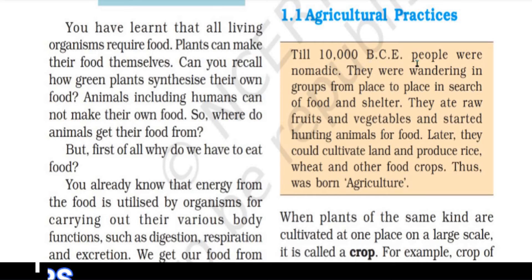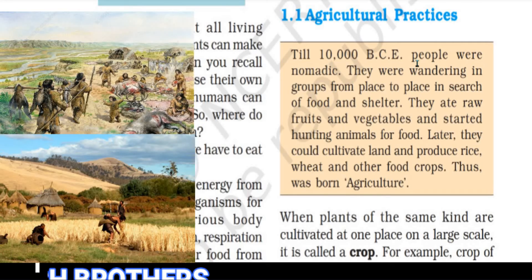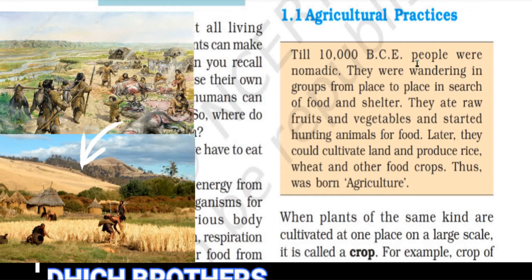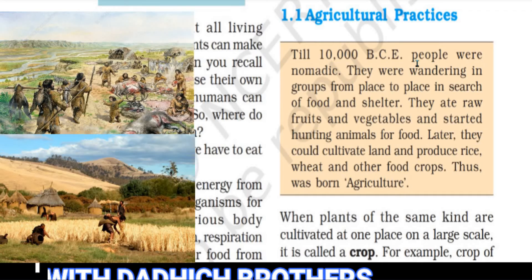Till 10,000 BCE, people were nomadic. They were wandering in groups from place to place in search of food and shelter. They ate raw fruits and vegetables and started hunting animals for food. Later, they cultivated land and produced rice, wheat and other food crops. Thus, it was born in agriculture.